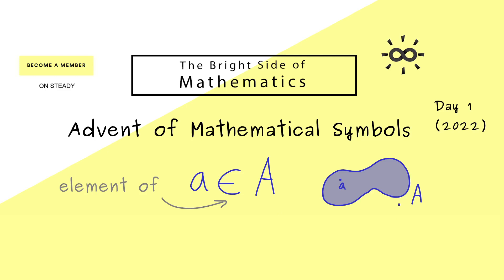However, it is also possible that the set capital A is also an element in another larger set. So we could write capital A is an element of a larger set, curved A.